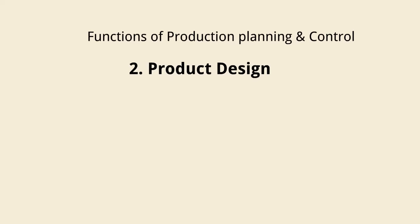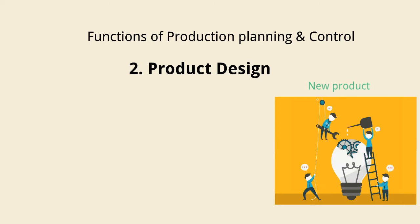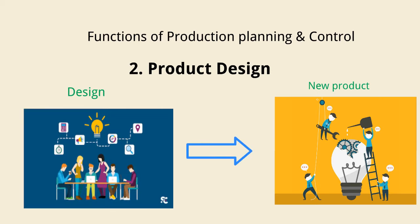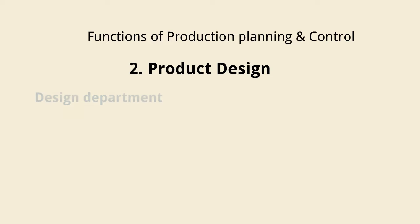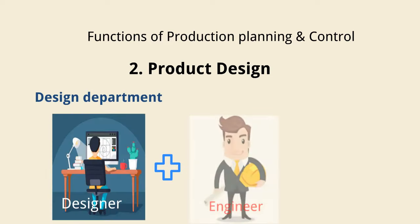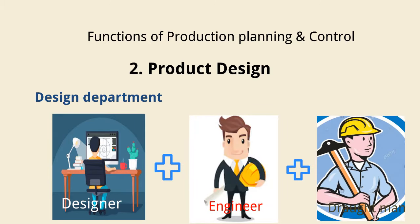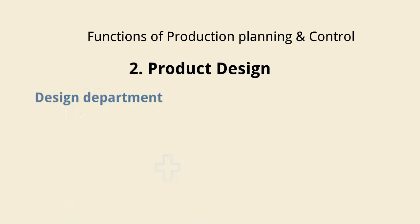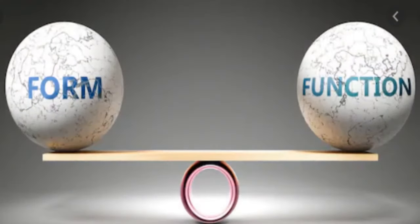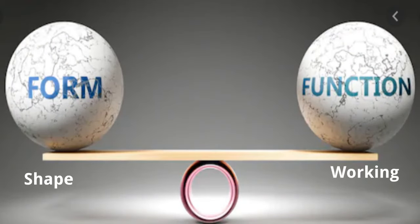2. Product design. Before starting to manufacture a new product or improve a product, it is essential to design the product first. The design department modifies and extends the range of an original idea. The design department consists of designer, engineer, and draftsman. Product design deals with both form and function — form design takes care of the product's shape, whereas functional design deals with its working.